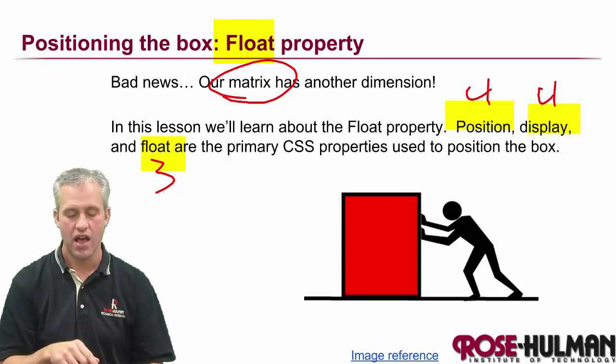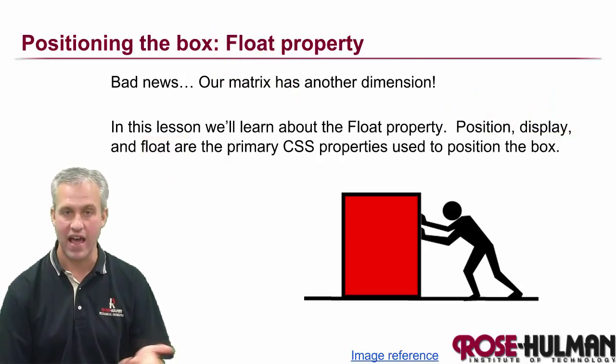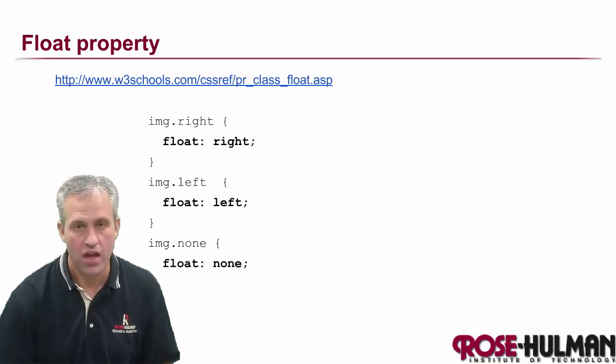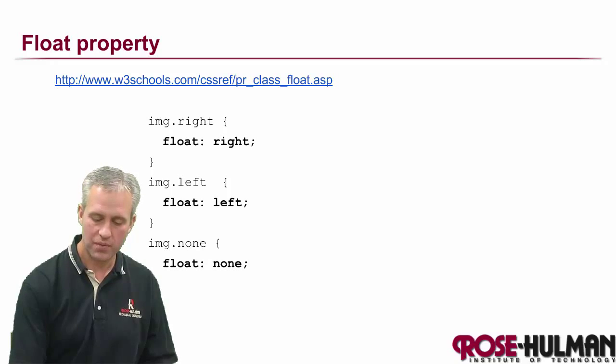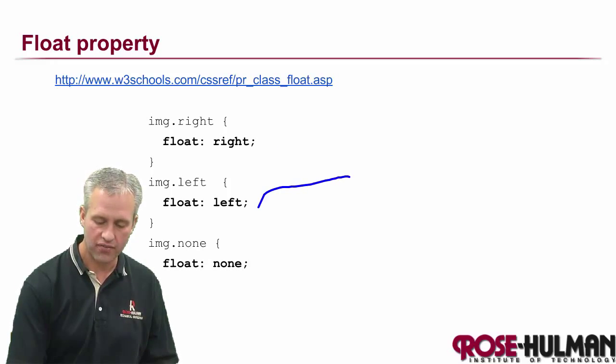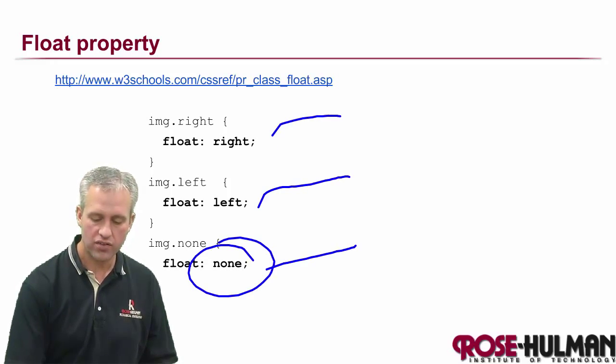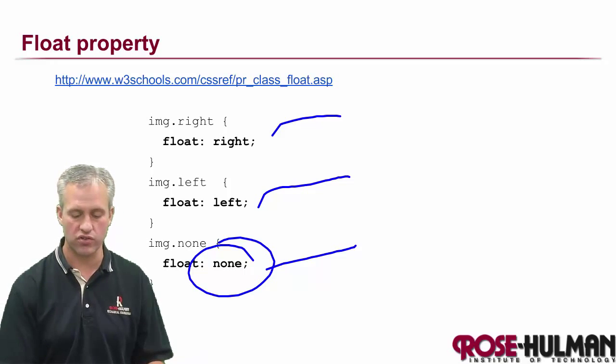Really, it was just seven. Float is not going to actually add another dimension, but that's one way you could think about it. First off, let's talk about what float can be set to. It can be set to right, left, or none. None is the default, and that's what you see most of the time.